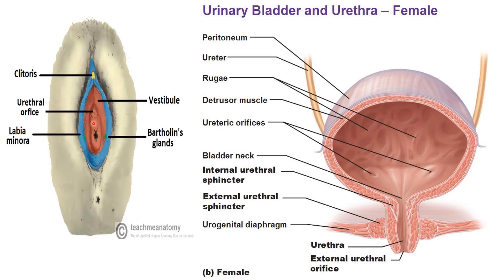This image shows the opening of the female urethra — the external urethral orifice. This is the vestibule where the urethra opens. Posteriorly, we can see the clitoris; anteriorly, we can see the vagina. This is the vaginal orifice. On either side of the vagina, we can see Bartholin's glands.